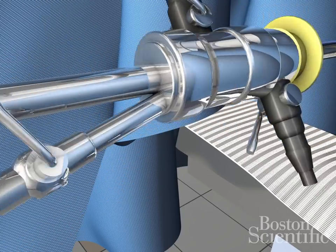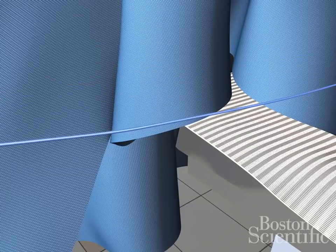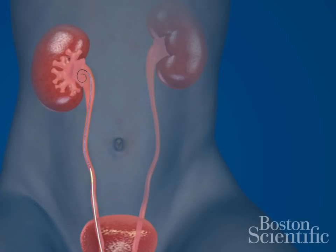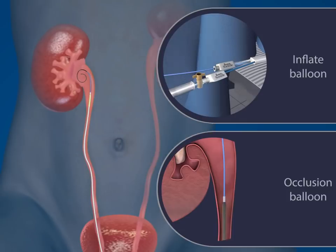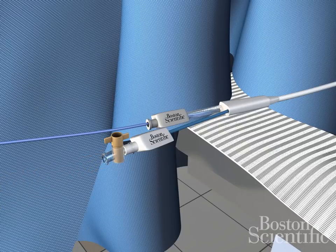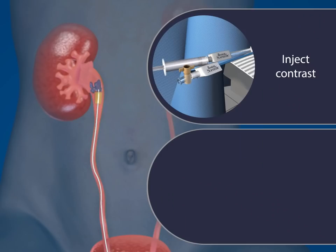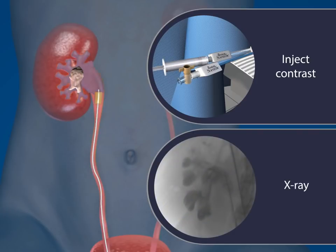The guide wire remains. Slide the occlusion balloon over the guide wire up to the ureteropelvic junction. Inflate the balloon through the lure lock connector. Remove the guide wire. Inject contrast material to confirm the location of the balloon and its occlusion of the ureter.